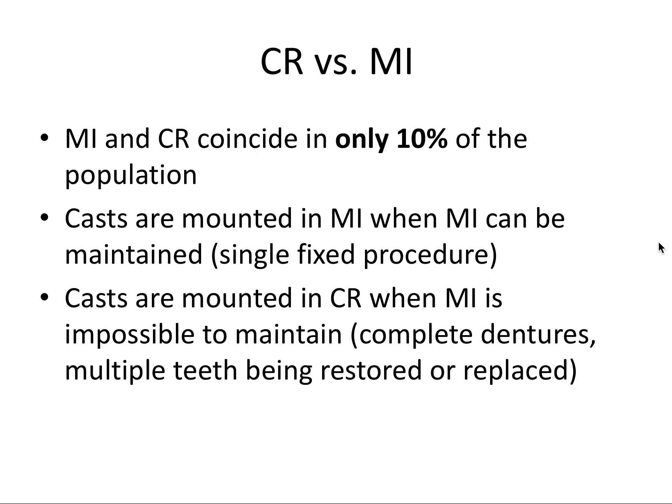MI and CR coincide in only 10% of the population. That means 90% of patients have a different CR position — where the condyles are at rest — and a different MI position — where the teeth are at rest. In these 90% of people, there's actually a slide in centric, meaning the teeth slide together between these two positions.